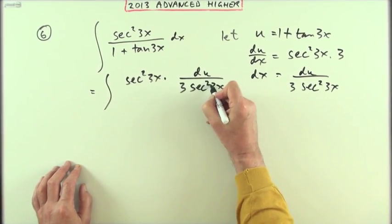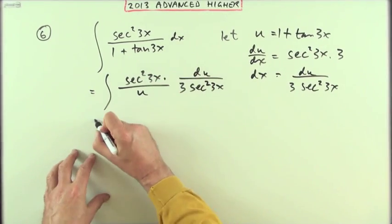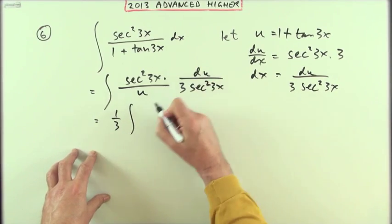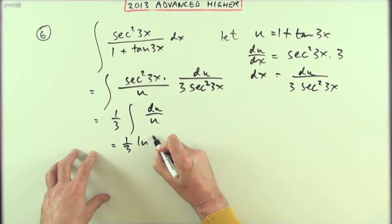So that then would equal sec squared 3x times du over 3 sec squared 3x, but the 1 plus tan 3x we could replace by u. Those parts would cancel out, leave them with, take the third out, one third of the integral of du over u.